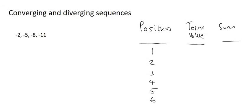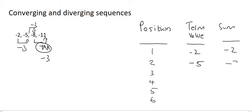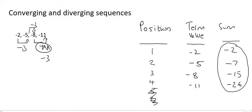Let's look at another pattern. This one is also arithmetic — we are subtracting 3 each time: minus 5, minus 3 gives minus 8; minus 8, minus 3 gives minus 11. So the first term value is minus 2, giving a sum of minus 2. The next term is minus 5, so the sum is negative 7. Then negative 8 takes us to negative 15, and negative 11 takes us to negative 26. These numbers just keep growing more negative — they're not going to approach one particular value. So this is also diverging.